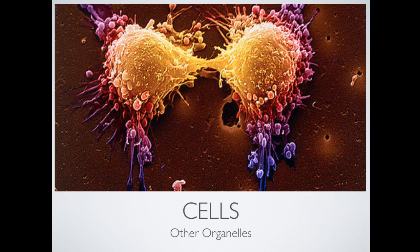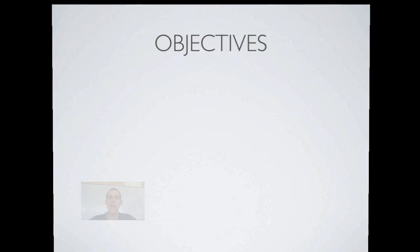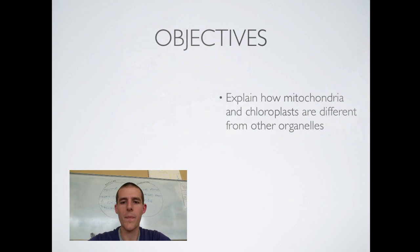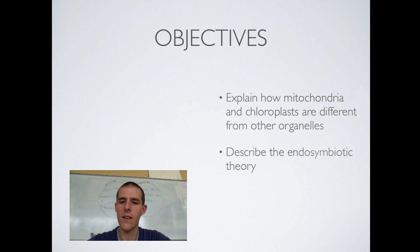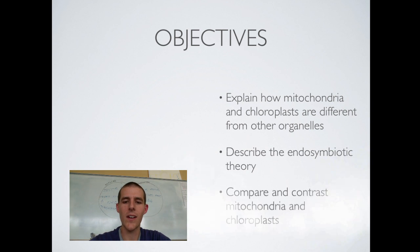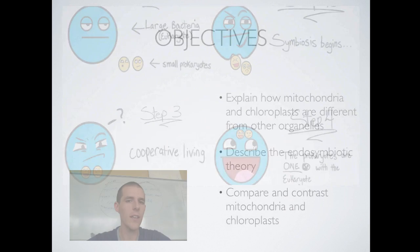Welcome back to Lab 207 webcast. I'm Mr. Kite, I'll be your guide for the day. Today we're continuing on in our series on cells, and our subtitle today is just 'other organelles.' In our last video we talked about the endomembrane system. Today we're going to talk about a couple of outliers. Our objectives are: explain how mitochondria and chloroplasts are different from other organelles, describe the endosymbiotic theory, and compare and contrast mitochondria and chloroplasts.